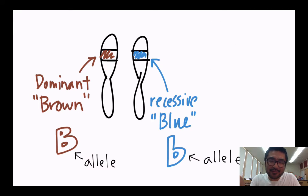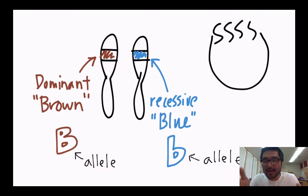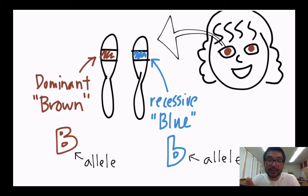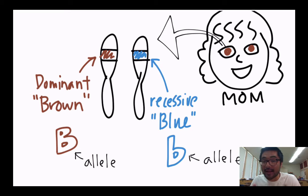Let's make it easy — your mom has the same alleles for that gene. So your mom also has capital B and lowercase b alleles for the eye color gene.